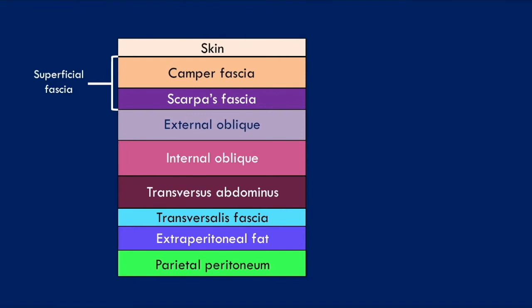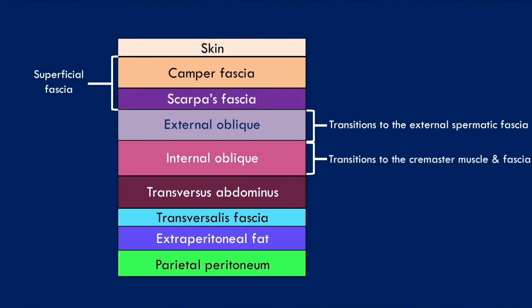Some of the layers of the anterior abdominal wall transition into layers that cover the spermatic cord. The external oblique muscle transitions into the external spermatic fascia. The internal oblique muscle transitions into the cremaster muscle and cremaster fascia. Finally, the transversalis fascia transitions into the internal spermatic fascia, all of which are coverings of the spermatic cord.